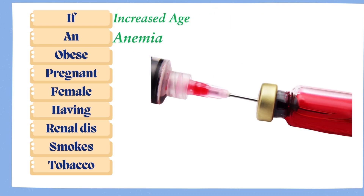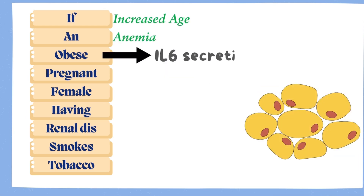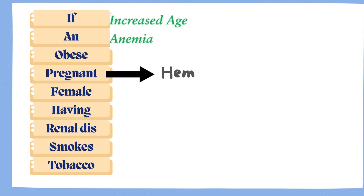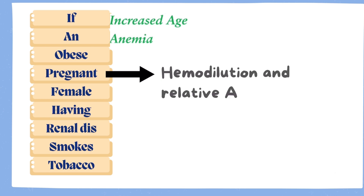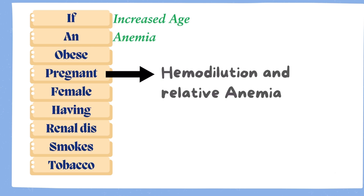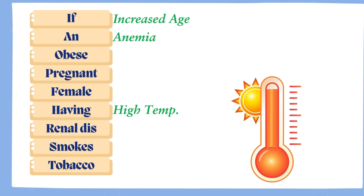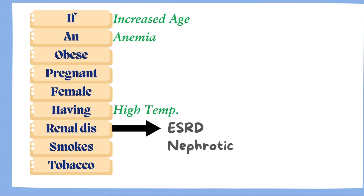Third on the list is obesity — adipose cells in obese individuals secrete IL-6, which increases fibrinogen. Fourth is pregnancy — hemodilution and relative anemia elevate ESR. Fifth are females — relative anemia and lower hemoglobin levels contribute to higher ESR compared to men. Sixth, from letter H, remember high room temperature, which increases RBC velocity, speeding up sedimentation. Next is renal disease — conditions like end-stage renal disease, nephrotic syndrome, and peritoneal dialysis raise ESR.